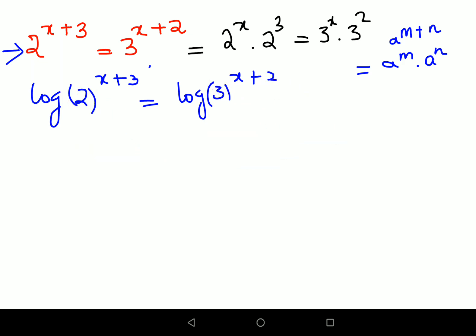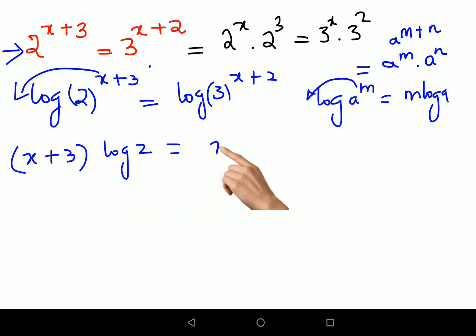Now as we all know that log of a raised to m can also be written as m log a, means the indices come ahead. So here also I can take the index ahead, so we'll get x plus 3 into log 2 and then you have x plus 2 into log 3.